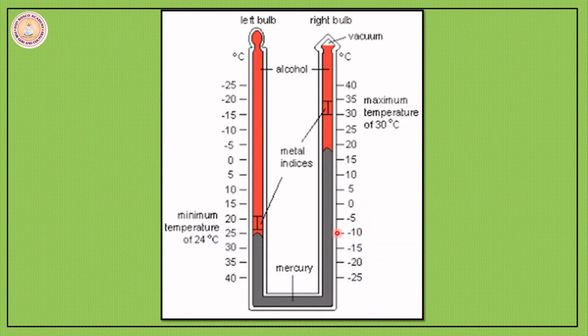Before I end, one important thing which I would like to tell you is: the difference between the maximum and minimum temperature of a day is known as the diurnal range of temperature. The difference between the maximum and minimum temperature recorded in a year is called the annual range of temperature.